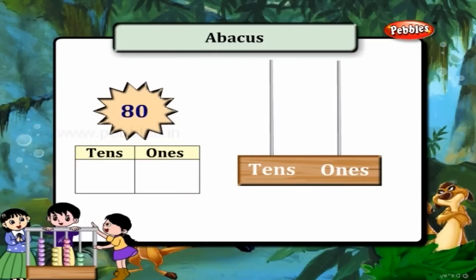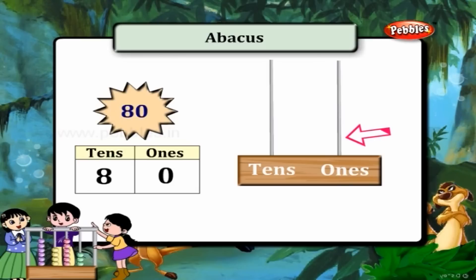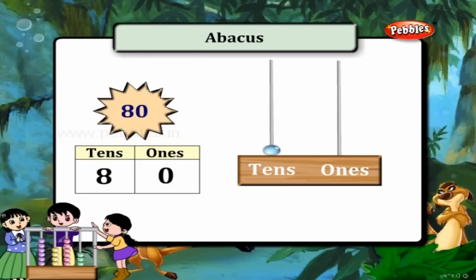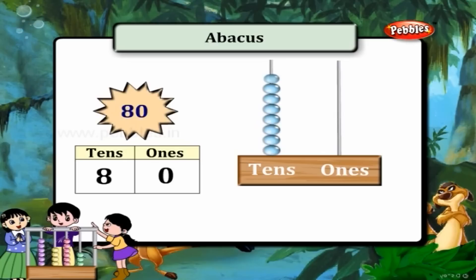Now for 80, there are 0 ones and 8 tens. So no beads on the ones line and 8 beads on the tens line.